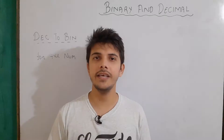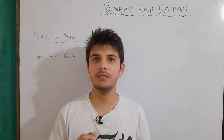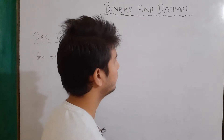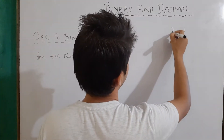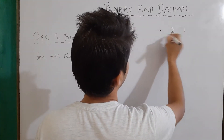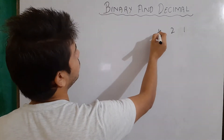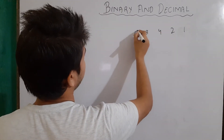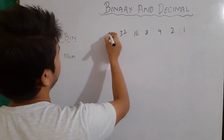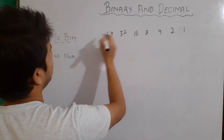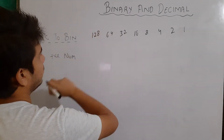Let's begin. For any conversion, first we will use this method in which we will write the number in this form: 1, and then 1 into 2 is 2, then 2 into 2 is 4, then 8, then 16, then 32, then 64, and then 128.